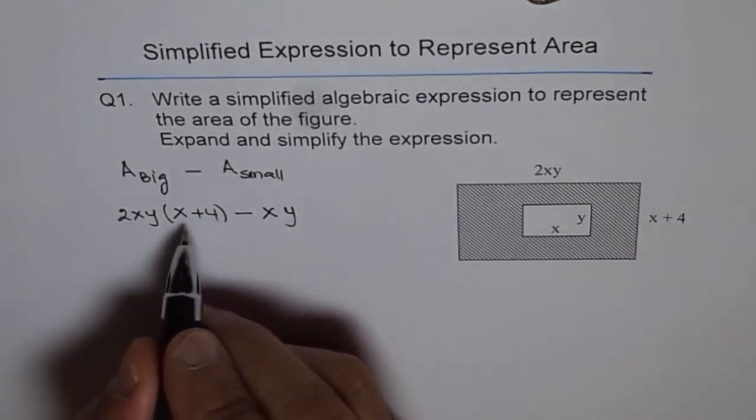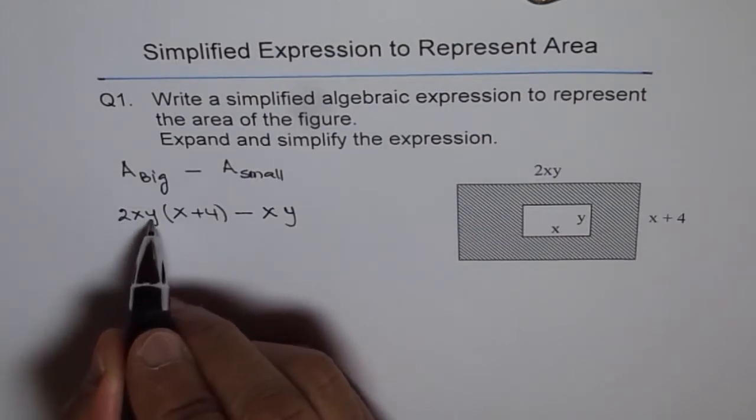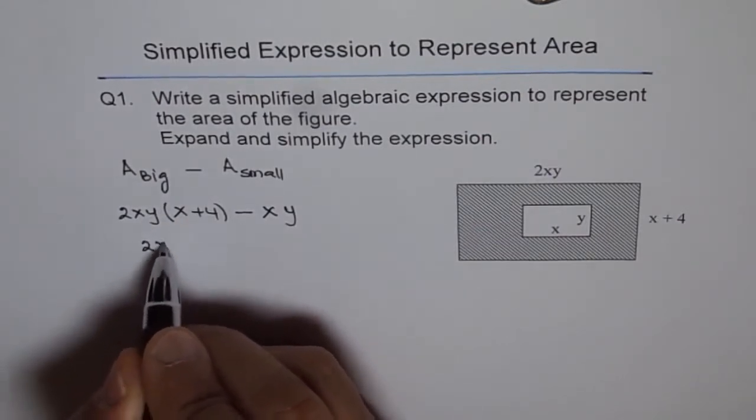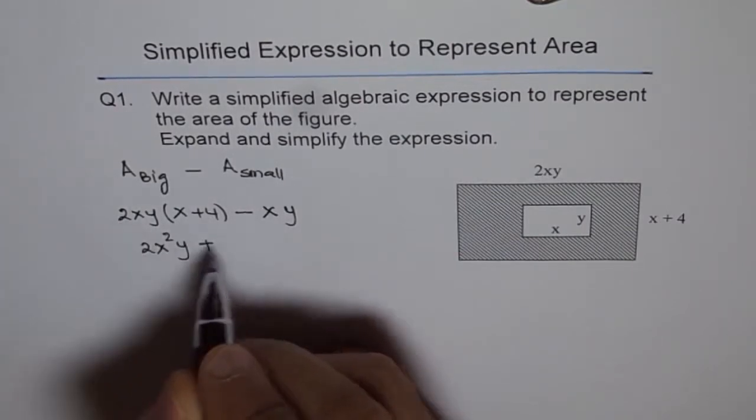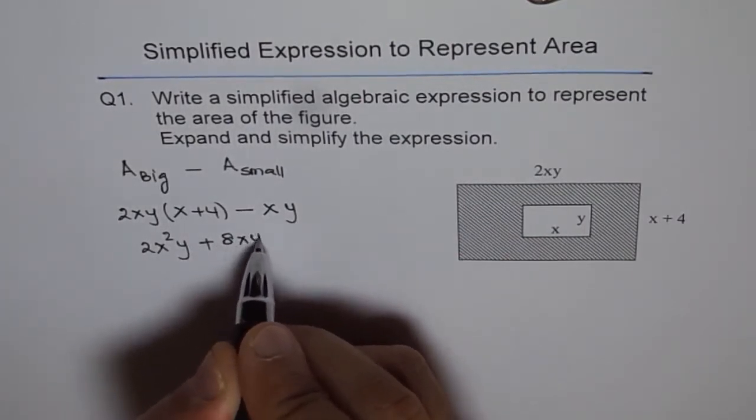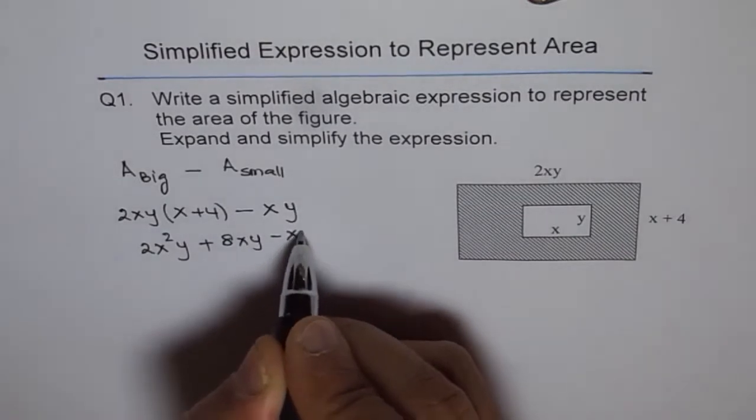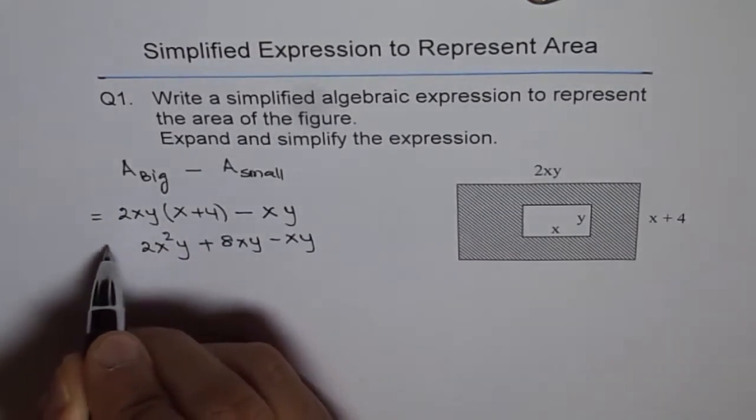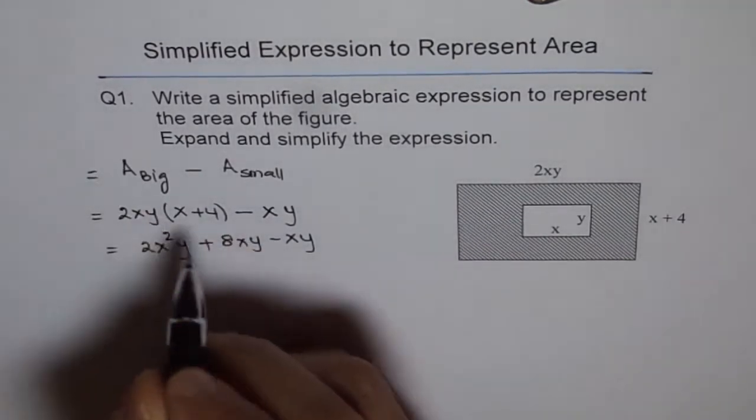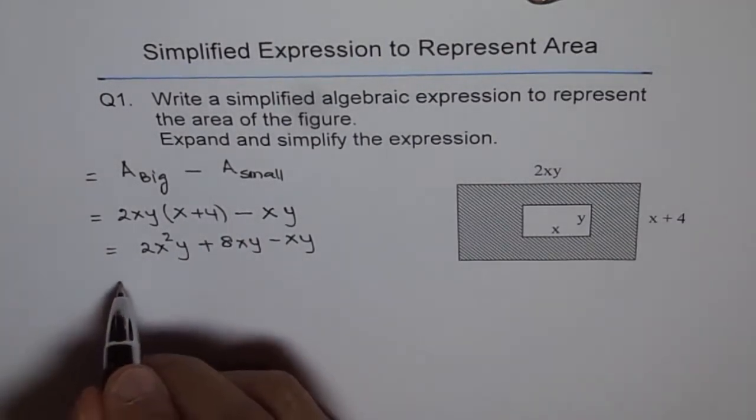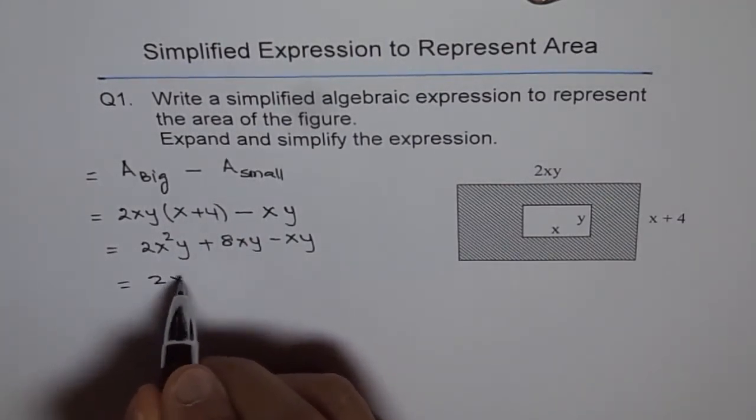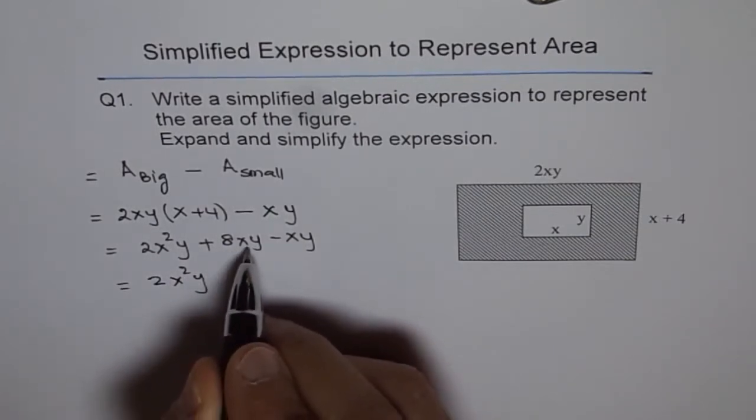When you expand this, 2xy times x is 2x²y, plus 8xy from the 4 times 2xy, and then we have minus xy. This is the area of the shaded portion. That can be simplified as 2x²y, and 8xy minus xy is plus 7xy. So that's a simplified expression with two terms written as products.